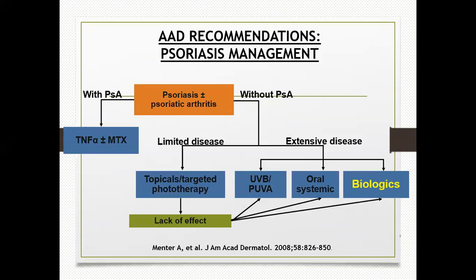Biologics are not the first drug to be used in psoriasis. If psoriasis is associated with arthritis, the best combination nowadays is infliximab or etanercept with methotrexate. If psoriasis is without arthritis and is limited disease, we can use topical therapies or targeted phototherapy. If those don't work, we resort to UVB or UVA therapy, or oral systemic agents like methotrexate, acitretin, or cyclosporine. However, for extensive disease, biologics can be considered from the start.